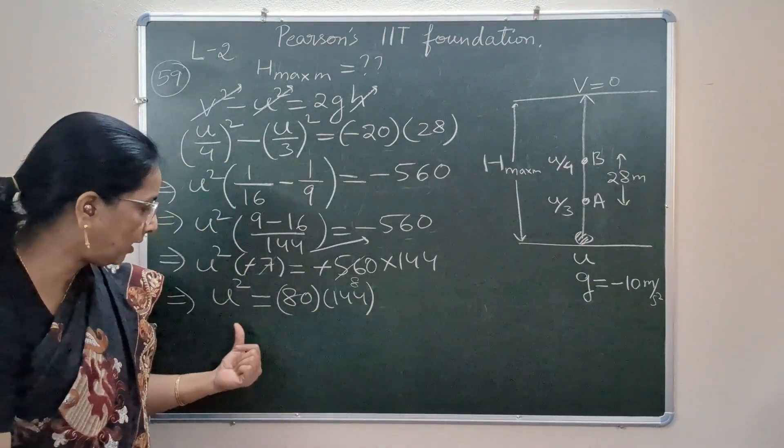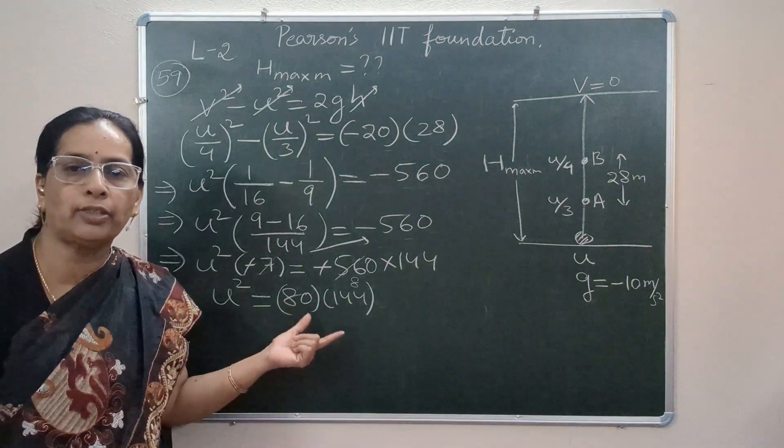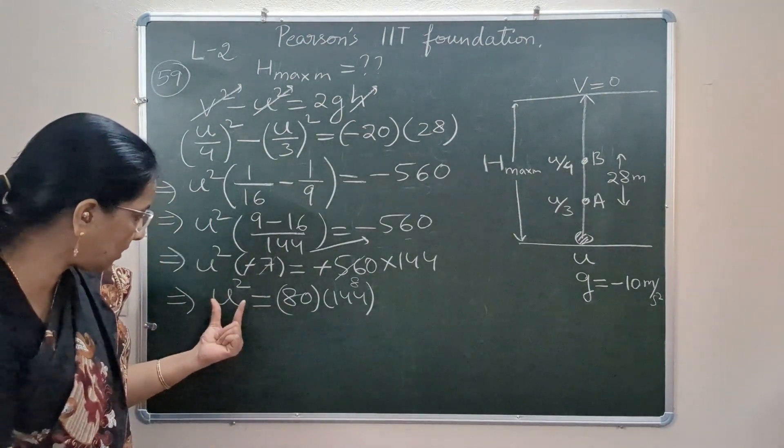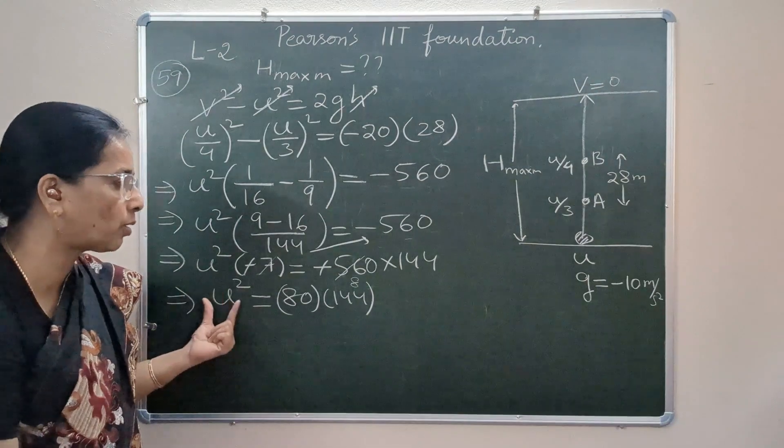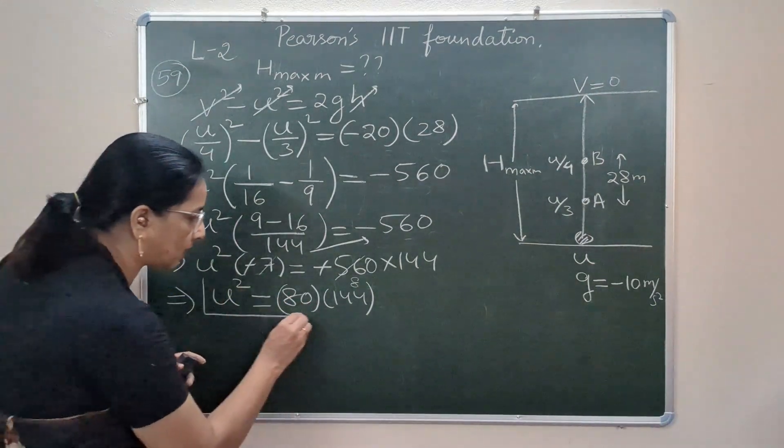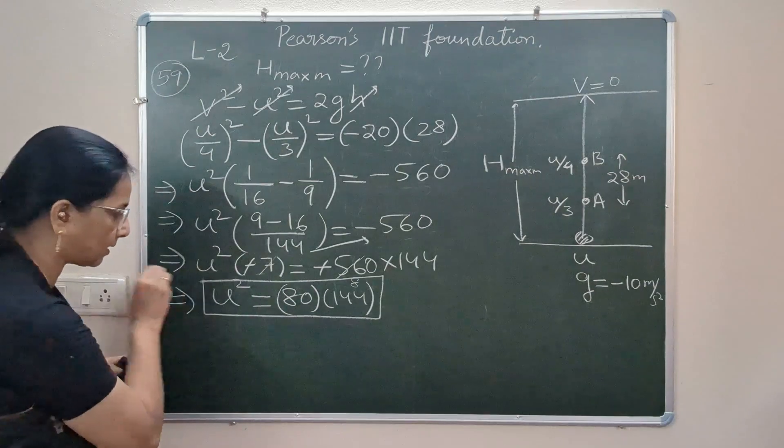So if we put in prime factors, u turns out to be 48√5. But right now I am just guessing that we may require u², so up to this we have reached and let us see the next step.